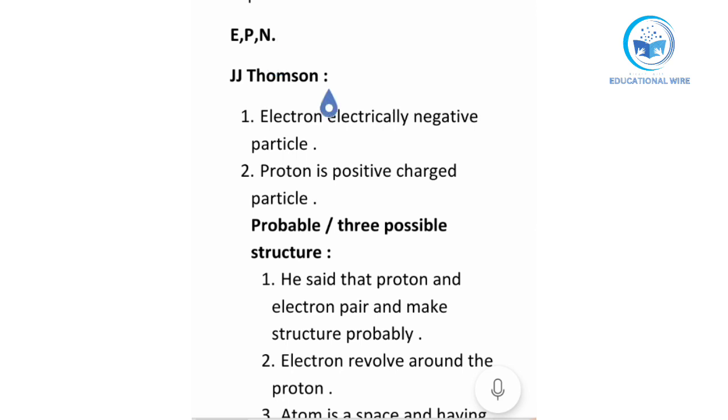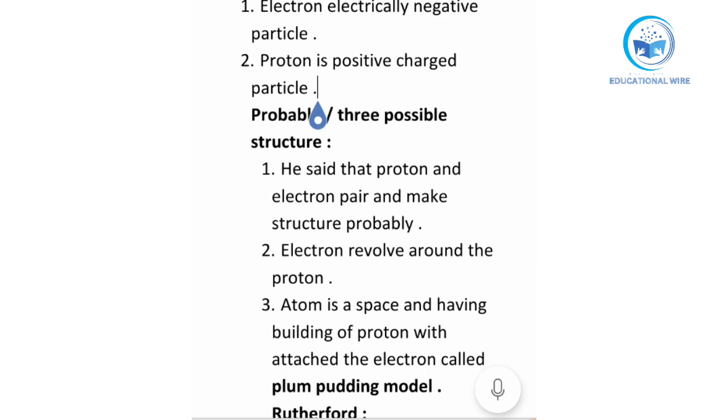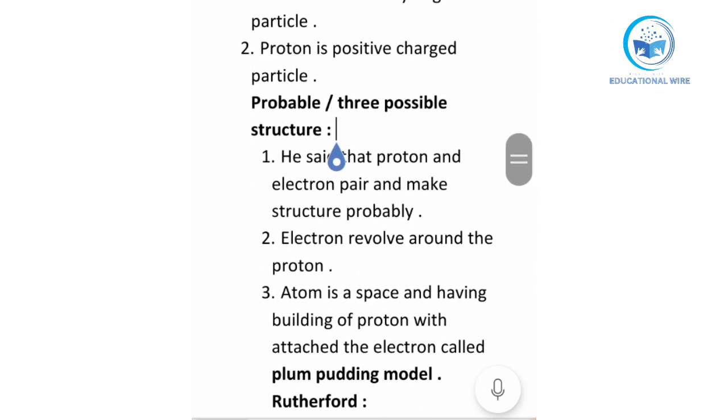J.J. Thomson gave a theory in which he said that electron is electrically negative particle, proton is positively charged particle. After that, three possible structures of J.J. Thomson. In first, he said that proton and electron pair and make structure probably. So let's make a diagram.